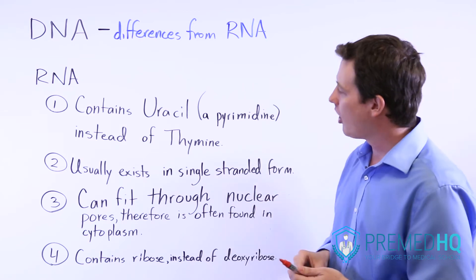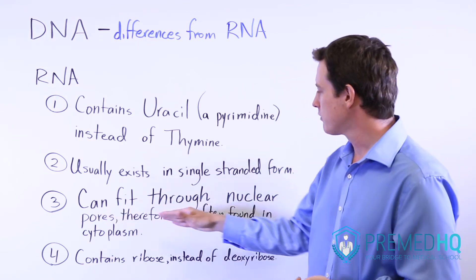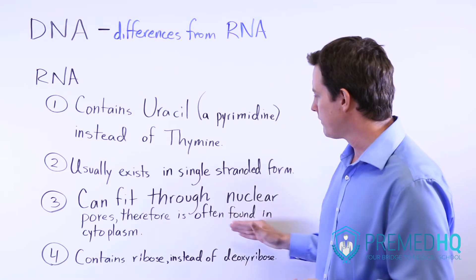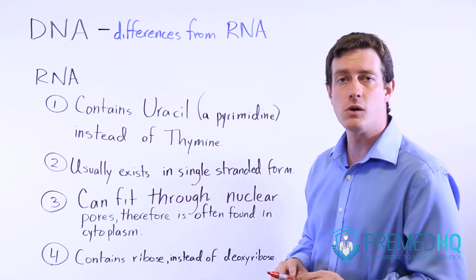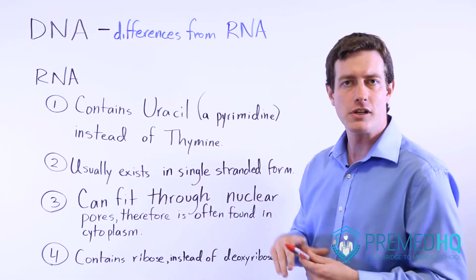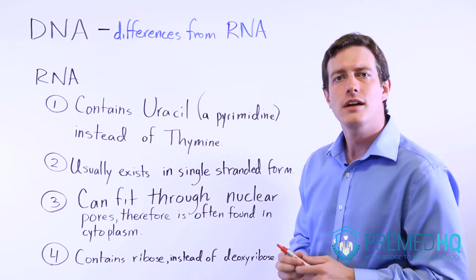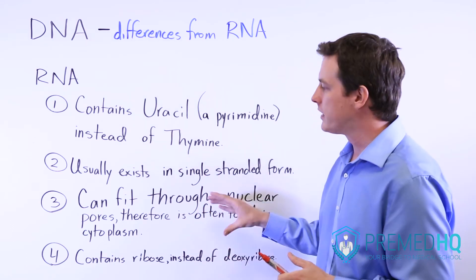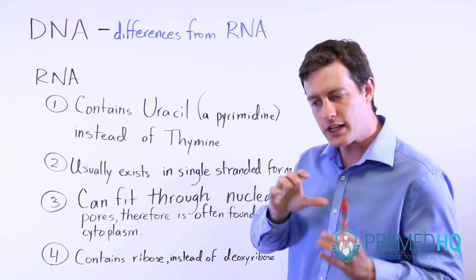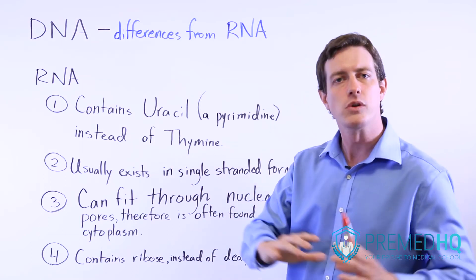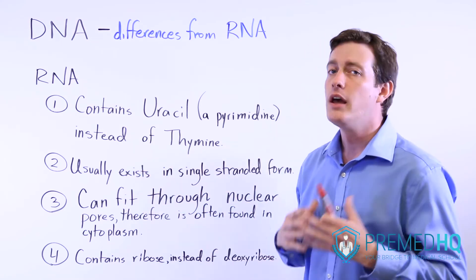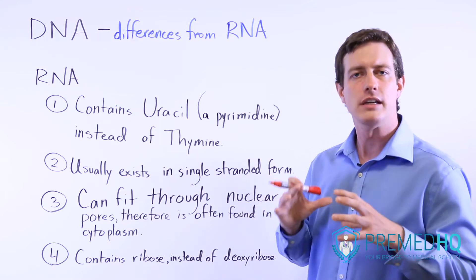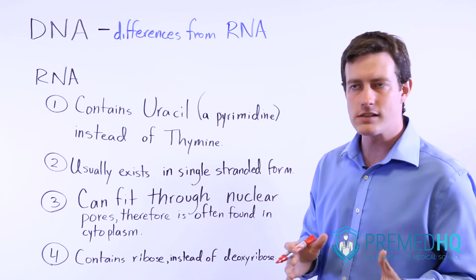Partly because of this, RNA is capable of fitting through nuclear pores, and therefore is often found in the cytoplasm. So a lot of times when you're looking at transcription and translation, the translation step will occur in the cytoplasm because the RNA is capable of moving out of the nucleus into the cytoplasm, whereas DNA you're likely to find sequestered within a nucleus in most healthy cells.